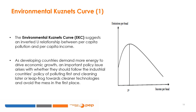The Environmental Kuznets Curve, EKC, suggests an inverted-U relationship between per capita pollution and per capita income. Such a relationship suggests that in the initial phase of increasing per capita income, citizens may be willing to accept poor environmental quality, but as income improves, a turning point will be reached and the demand for a better environment will arise. Increases in wealth will lead to further reduction in environmental pollution. If such a relationship holds, economic growth will cure the environmental problem and the damage may be transitional. The economic logic behind the EKC suggests that as developing countries demand more energy to drive economic growth, an important policy issue arises: whether they should follow the industrial countries' policy of polluting first and cleaning later, or leapfrog towards cleaner technologies.